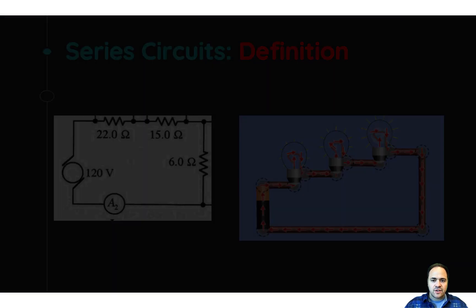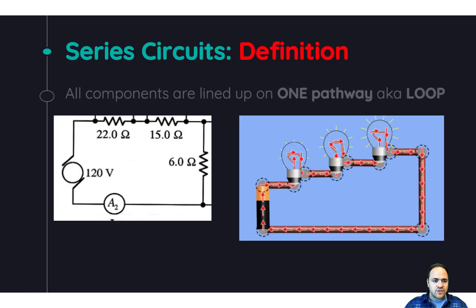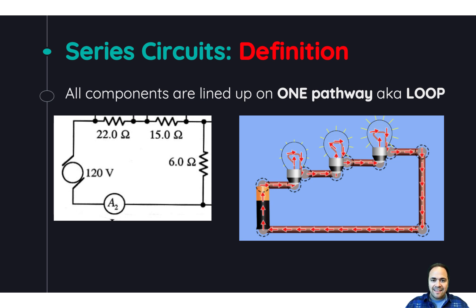A series circuit is a circuit where all of the circuit's components are along one path or one loop. So if you have bulbs, resistors, a refrigerator, or anything that can be hooked into the circuit, it will be along the same path as everything else.